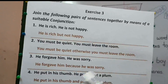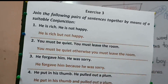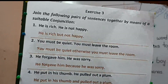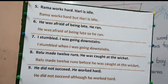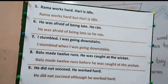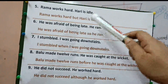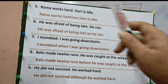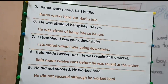Fourth part: he put in his thumb. He pulled out a plum. Here both sentences are giving positive meaning, so when both sentences are in a positive and similar manner we will use 'and' in between. He put in his thumb and pulled out a plum. Fifth part: Rama works hard. Hari is idle. Rama works hard but Hari is idle. I have used 'but' because one is positive — working hard — and the other is negative — Hari remaining idle. 'But' is used for the contrast between the two sentences.